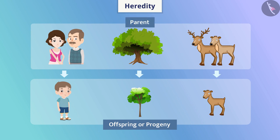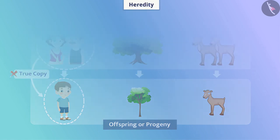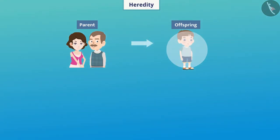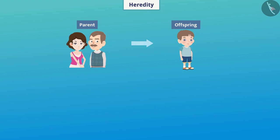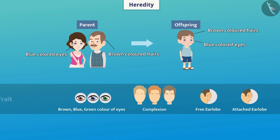In appearance, the offspring matches its parents but it is not a true copy of the parent. When we talk about a child being similar to its parent, we mean the characteristics which are similar between parent and offspring. Various features that we see are called traits. In the process of reproduction, these traits are transmitted from one generation to the next through gametes.